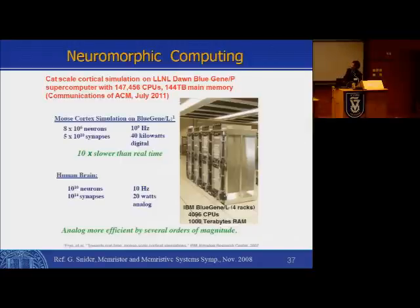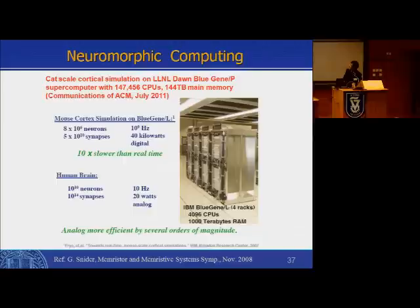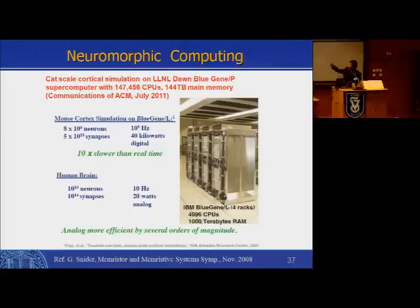This shows what Lawrence Livermore National Lab people did in collaboration with IBM. They tried to mimic mouse cortex — so many neurons and synapses. Running at gigahertz, it requires 40 kilowatts of power, which is much, much simpler than the human brain, which has 10^10 neurons, 10^14 synapses, running only at 10 hertz, consuming only 20 watts, and is analog. So how can you try to mimic the human brain function?